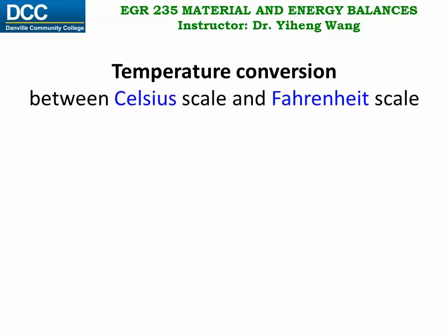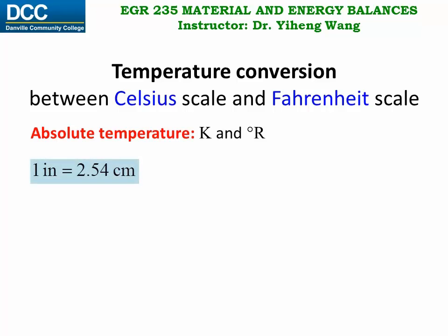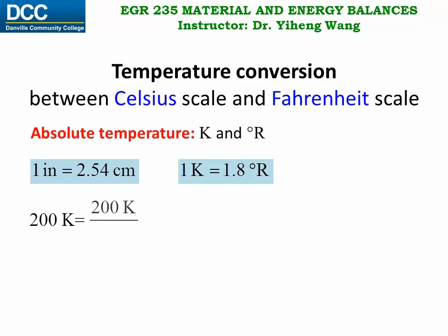If you want to convert between the Celsius scale and Fahrenheit scale, for the absolute units Kelvin and degree Rankine, it is very straightforward — just like one inch equals exactly 2.54 centimeters, one Kelvin equals exactly 1.8 degree Rankine. Therefore, if you want to convert 200 Kelvin to degree Rankine, you multiply by the conversion factor written from the equality, cancel out Kelvin, and get 360 degree Rankine.